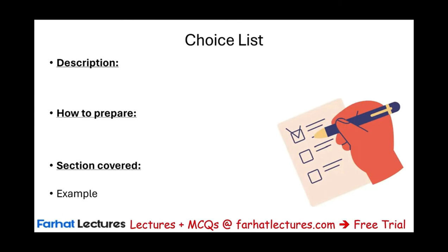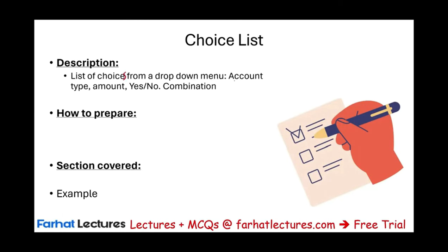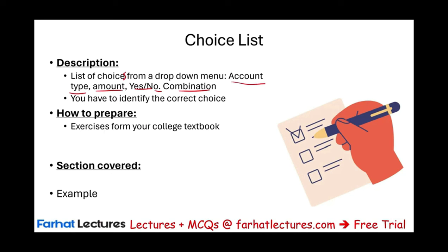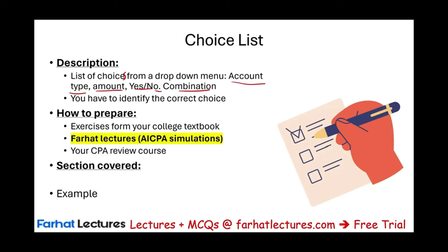The fourth type is a choice list — a list of choices from a drop-down menu. It could be an account type, an amount, yes/no, or a combination of those. You have to identify the correct choice from the drop-down list. Prepare with exercises from your college textbook related to the topic, Farhat Lectures, and your CPA review course. This is a combination: you need knowledge, familiarity with the simulation type, and confidence.